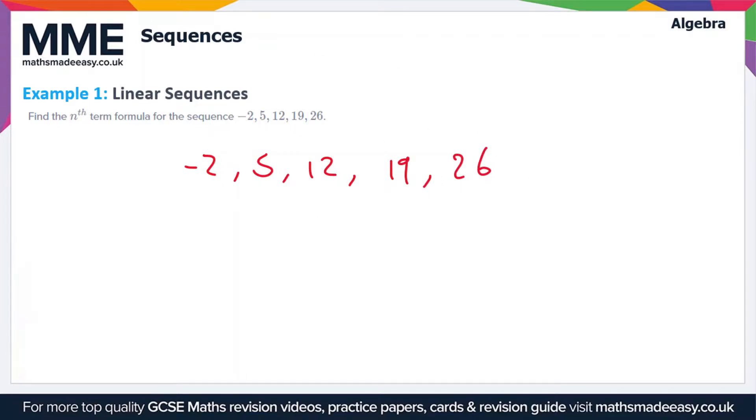For a linear sequence, the nth term is in the form an plus b, where a and b are constants to be determined. A is the common difference. We get that by finding the difference between two terms. Here the difference between -2 and 5 is 7, so we're adding 7 each time to get from one term to the next, so a equals 7.